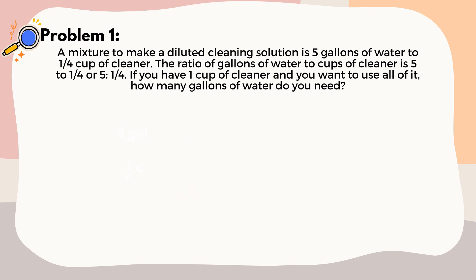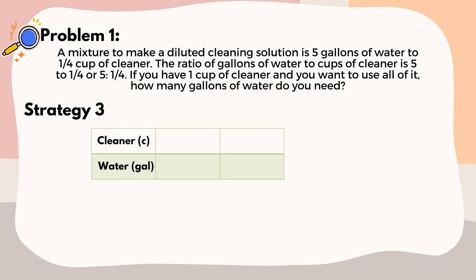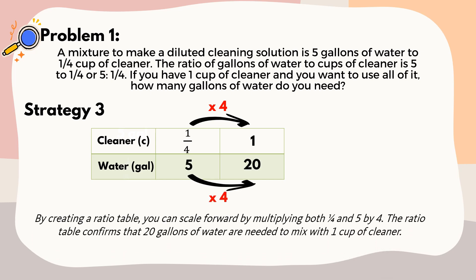Now let's proceed to the third strategy. By creating a ratio table, you can scale forward by multiplying both one-fourth and five by four. The ratio table confirms that 20 gallons of water are needed to mix with one cup of cleaner.